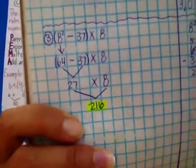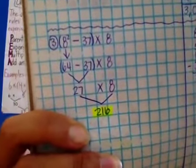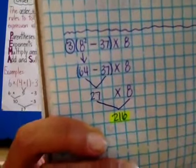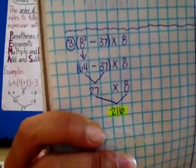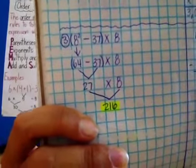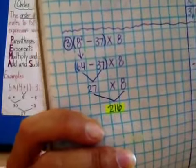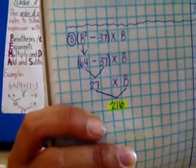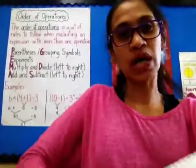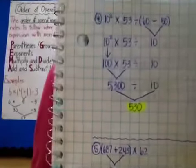For number three, the answer is 216. You need to show how you did the exponent, show how you subtracted, show how you multiplied. And moving on to number four, the answer is 530.